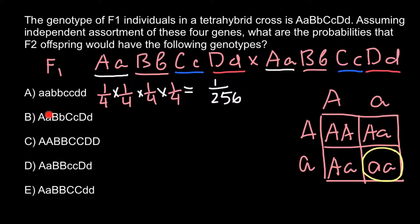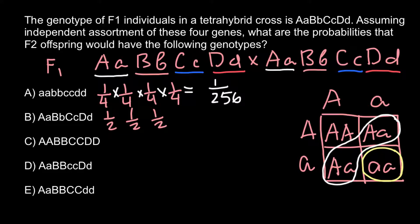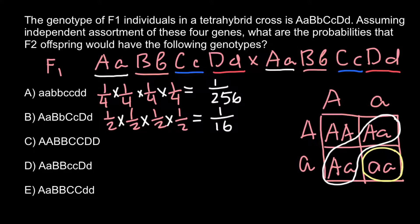Now let's consider the next genotype. The probability for a plant to be heterozygous is 2 out of 4, or one half. So one half for gene A, one half for gene B, one half for gene C, and one half for gene D. Using the product rule, one half times one half equals one quarter, times one half equals one eighth, times one half equals 1 over 16.